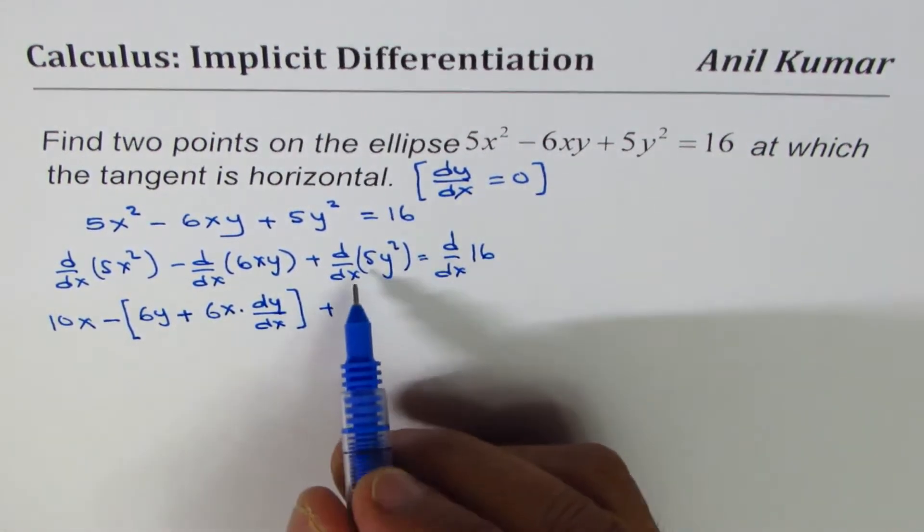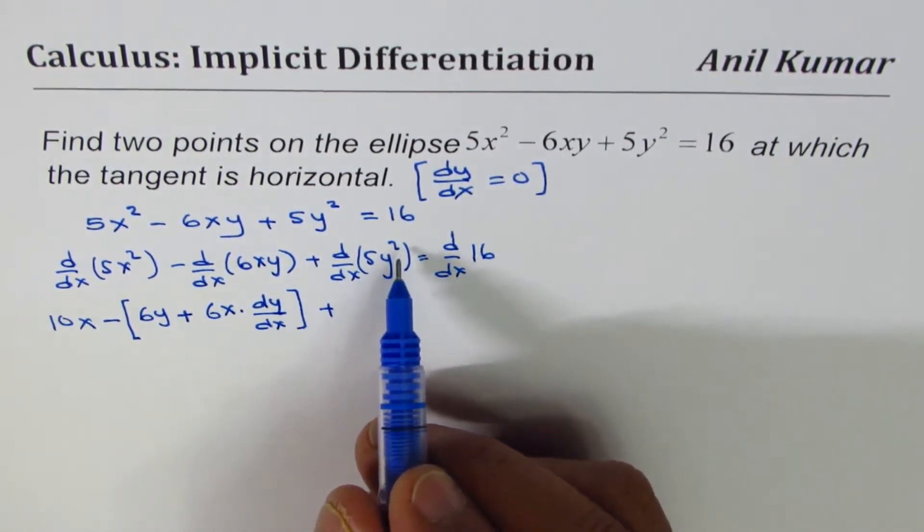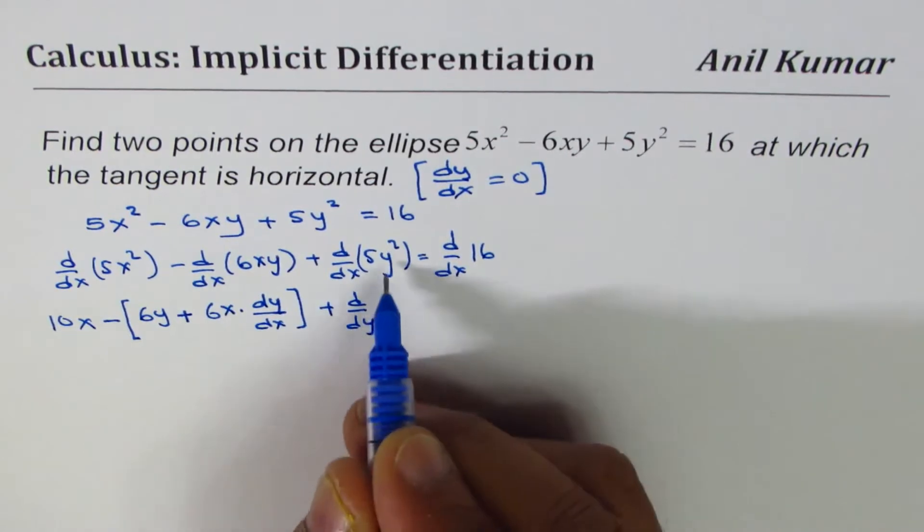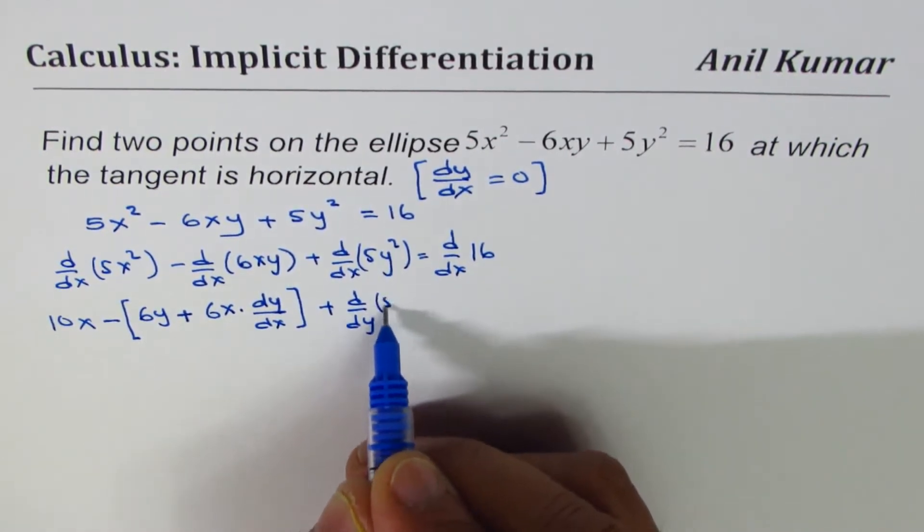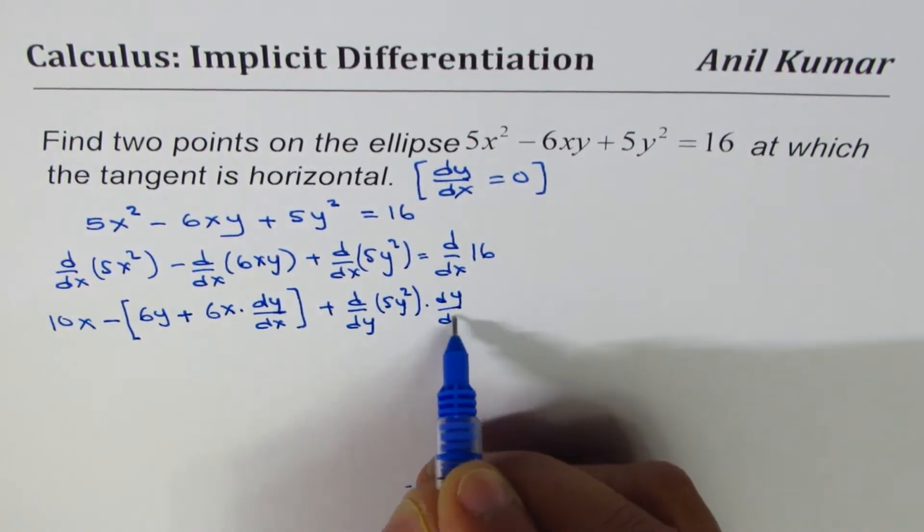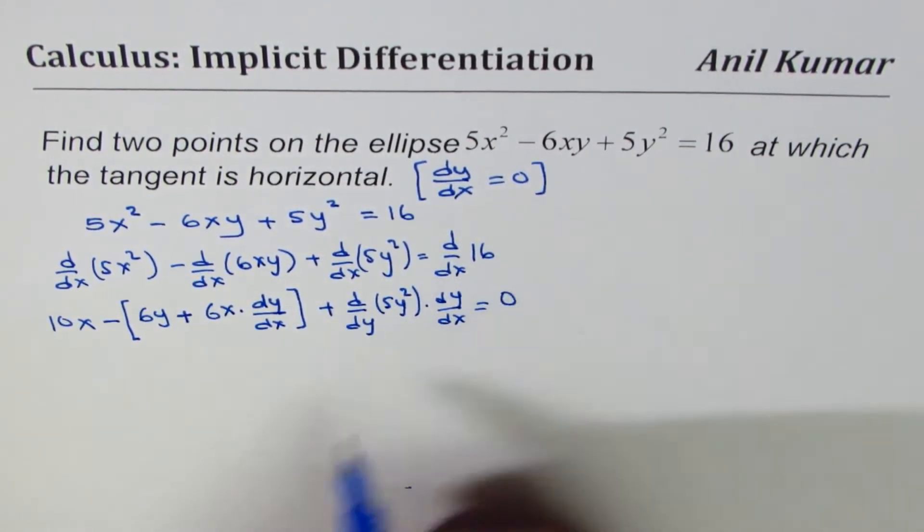Plus, now whenever it is d/dx of y squared, we will find dy/dx like this: derivative of y with respect to y times dy/dx. So we applied the chain rule here. Derivative of a constant is always 0.